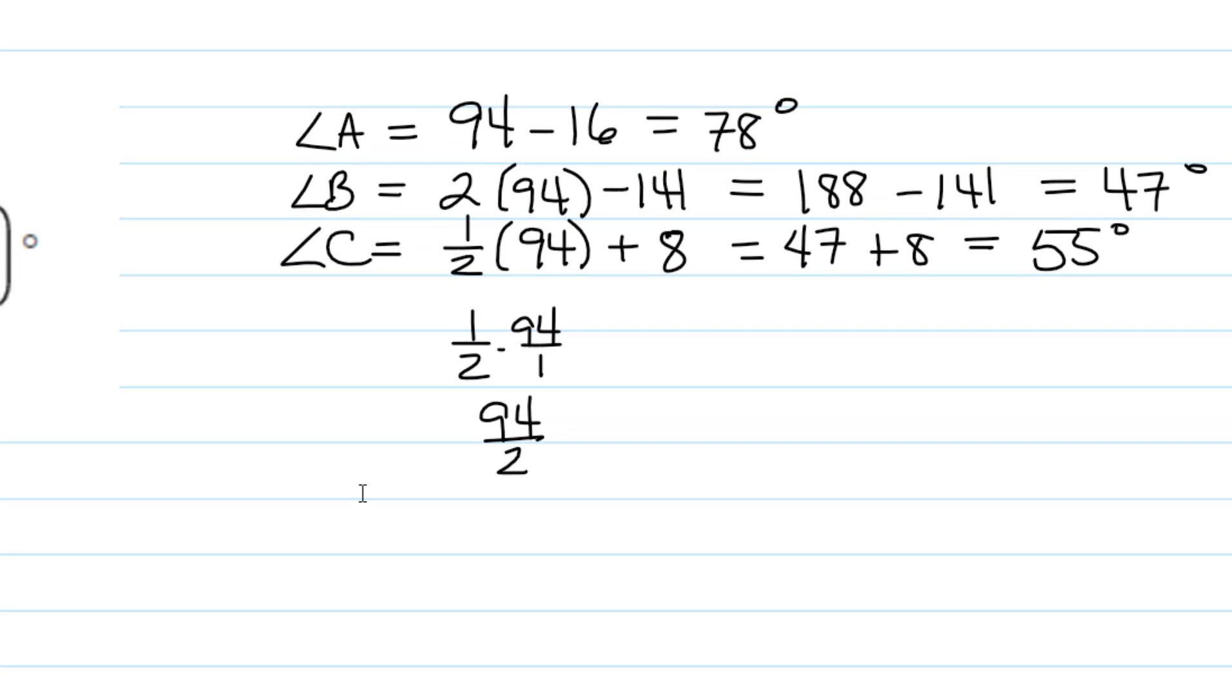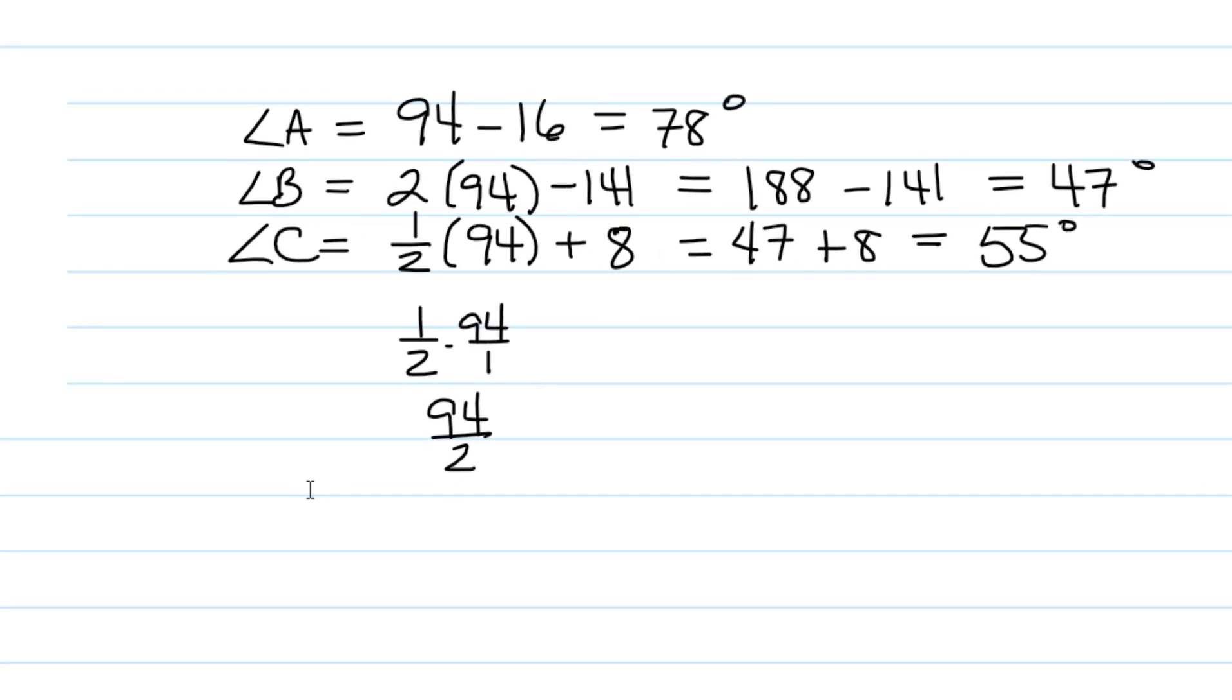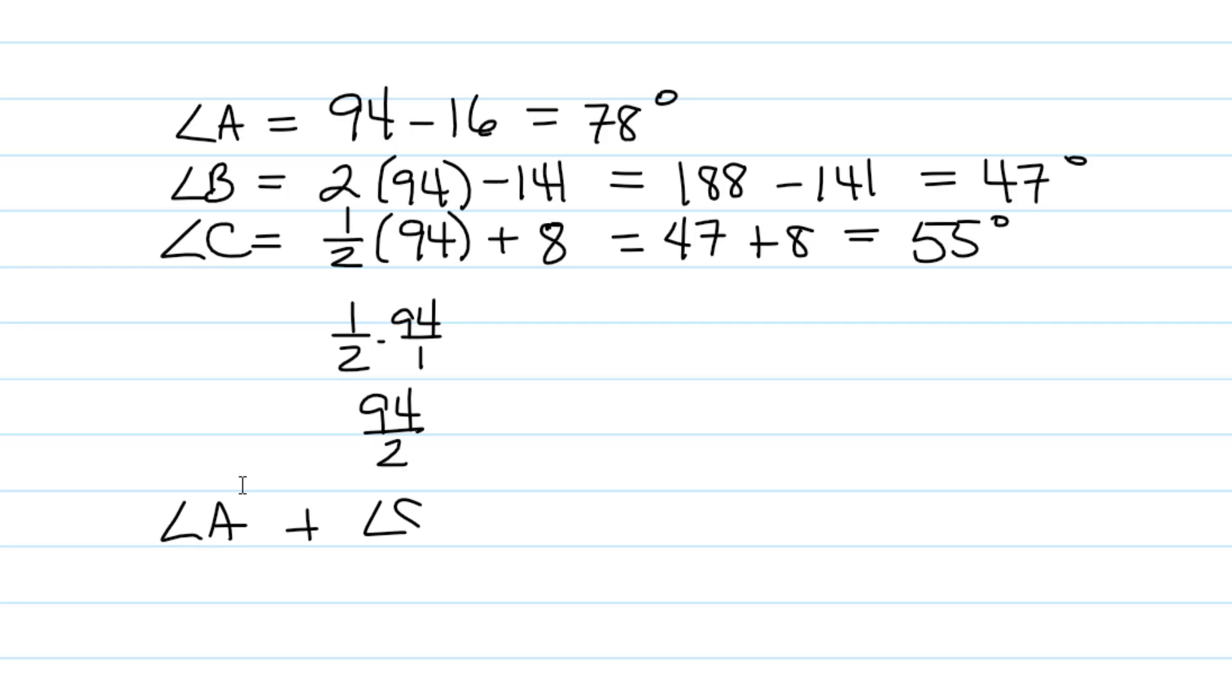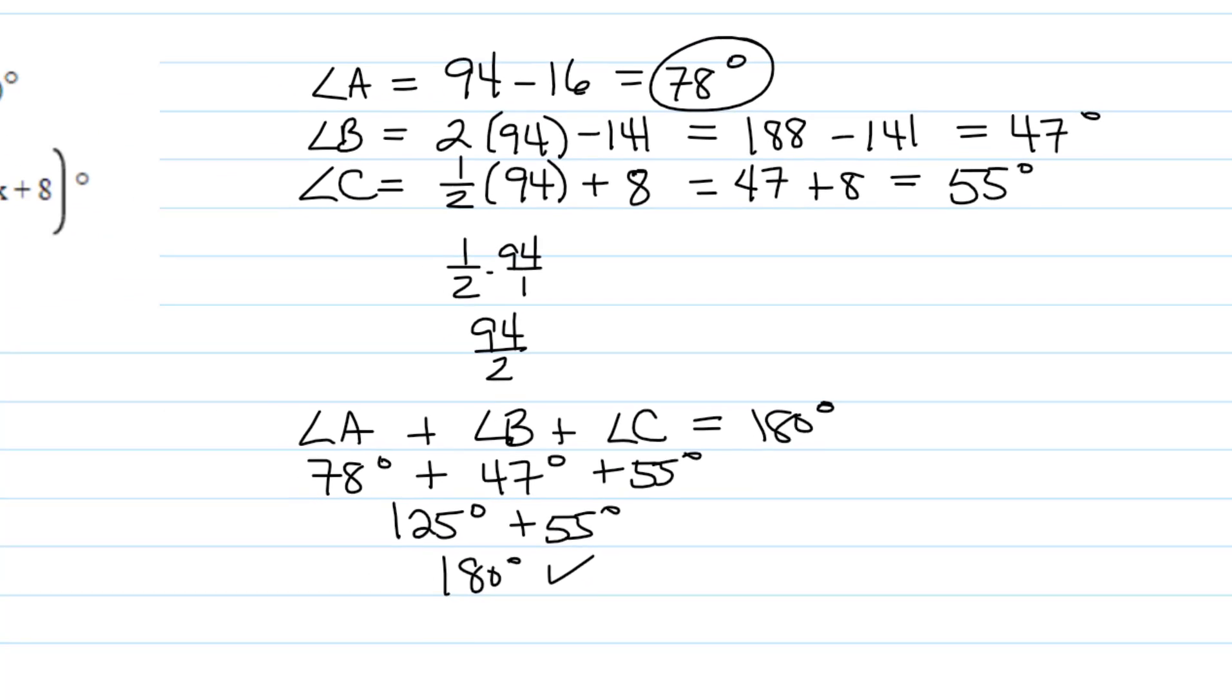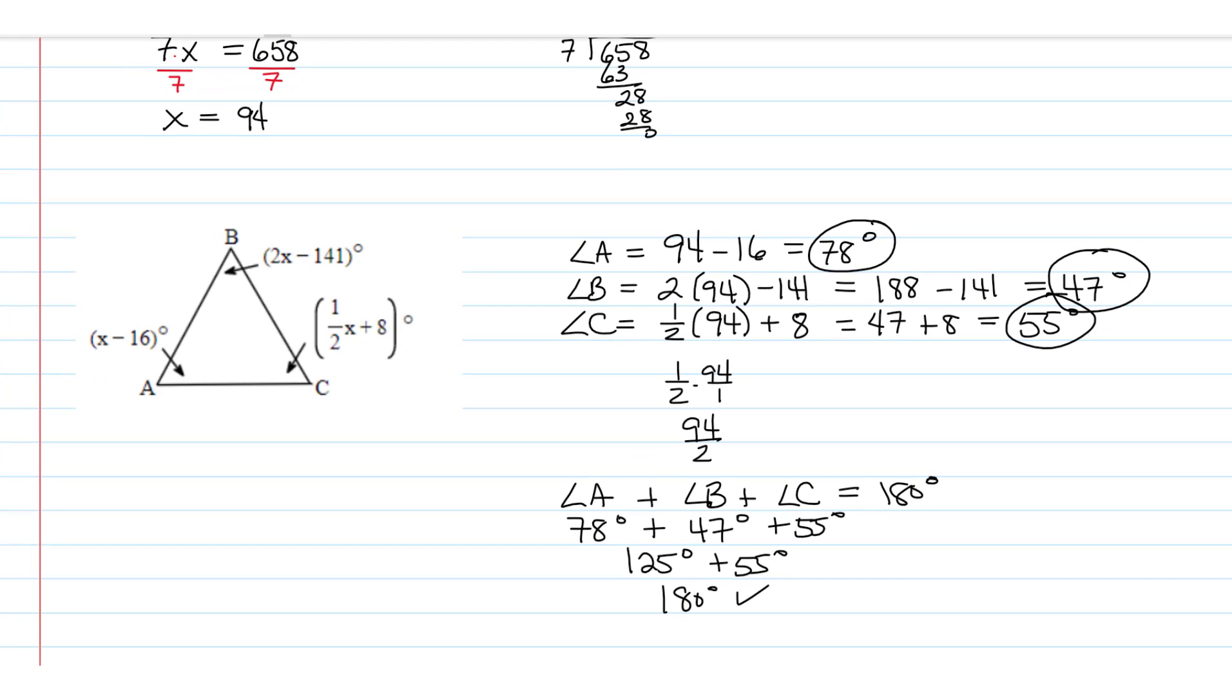And then what could you do just to check to make sure your answers are reasonable? One thing you could do is we know that all of these angles are supposed to add up to 180 degrees. So let's just check that they do. What would 78 degrees plus 47 degrees plus 55 degrees add up to? So 78 plus 47 is going to be 125. And then if we add 55 to that, we do get 180. So it seems like the angles we found, 78, 47, and 55, are reasonable answers.